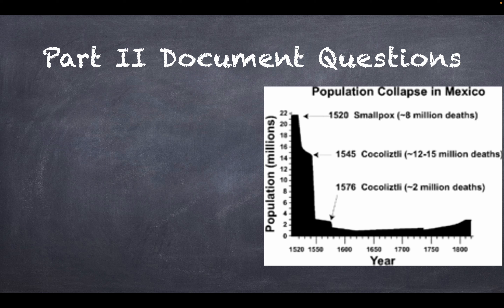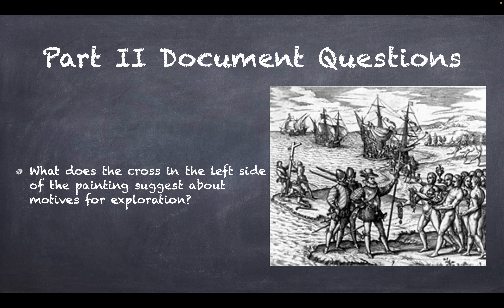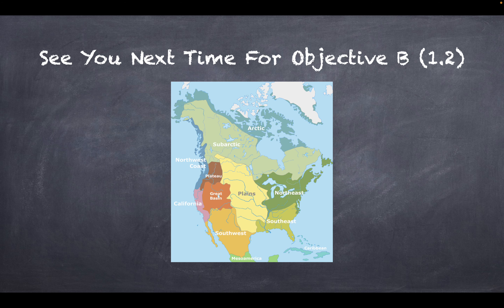To end this video, here are some document-based questions to consider: Looking at the population collapse chart for Mexico, what were reasons for the drastic decline of Native American populations? And what does the cross in the left side of the painting suggest about motives for Spanish exploration? I look forward to seeing you in video number two, covering Objective B, Topic 1.2. Thanks for watching, and best of luck on your exam!